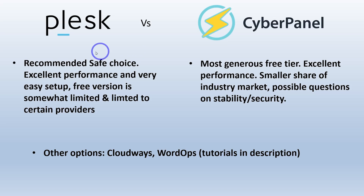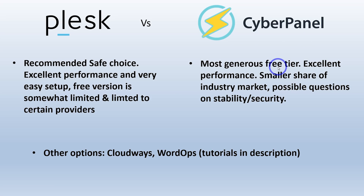To wrap things up: Plesk is the recommended safe choice — excellent performance and a very easy setup. The free version does have a three-domain limit and is limited to certain providers. But if you're happy to use Vultr or Digital Ocean and don't need more than three domains, there's really no disadvantage. If you're in a developing country and need to stretch your budget as far as possible, Cyberpanel offers a very generous free tier with lots of great free features, though it has a smaller market share and those stability concerns to be aware of.